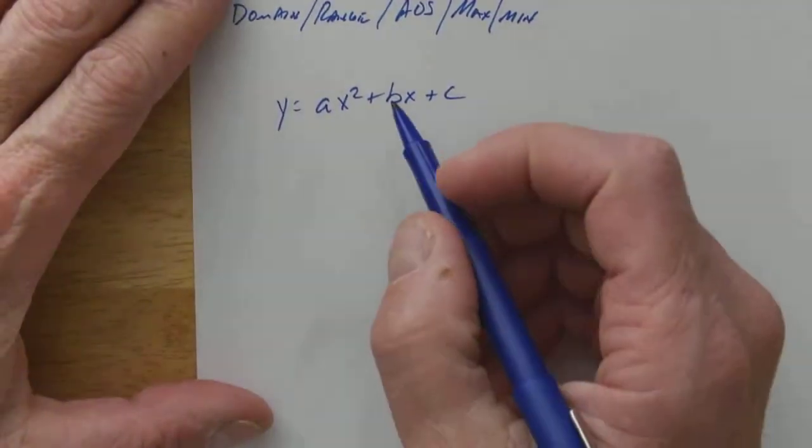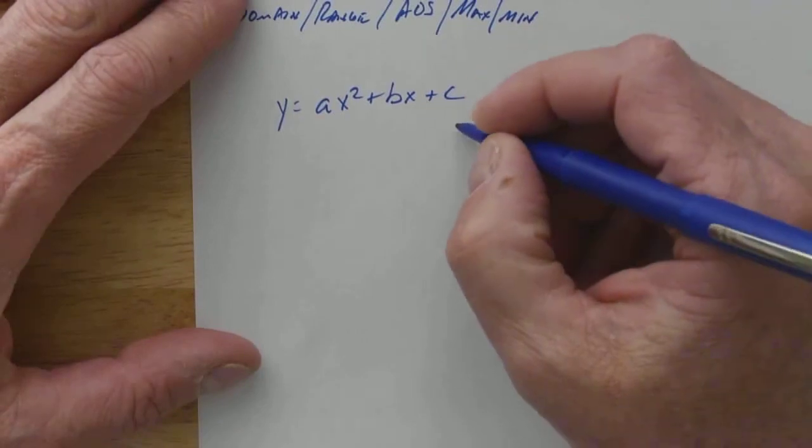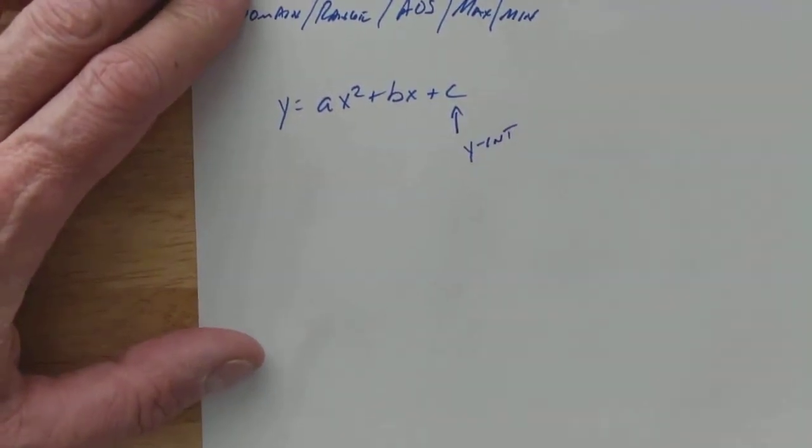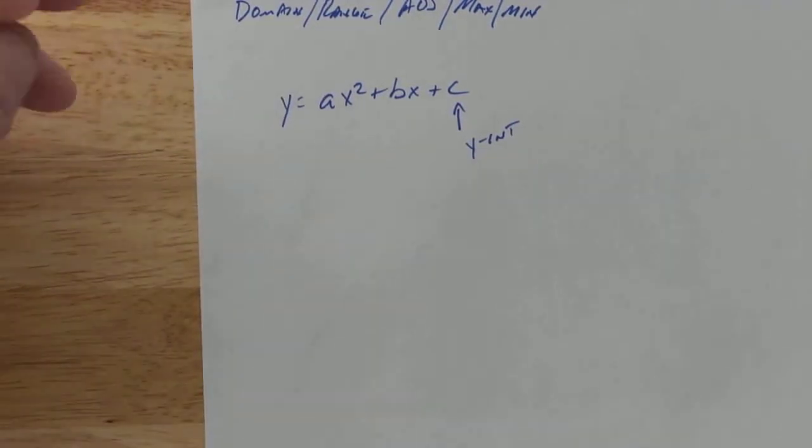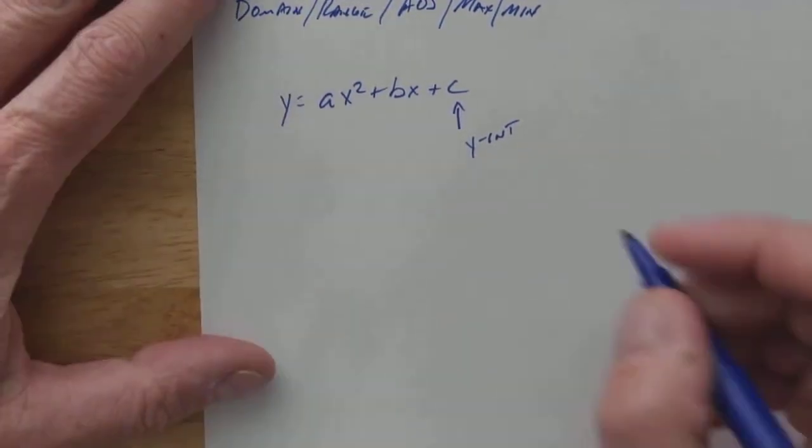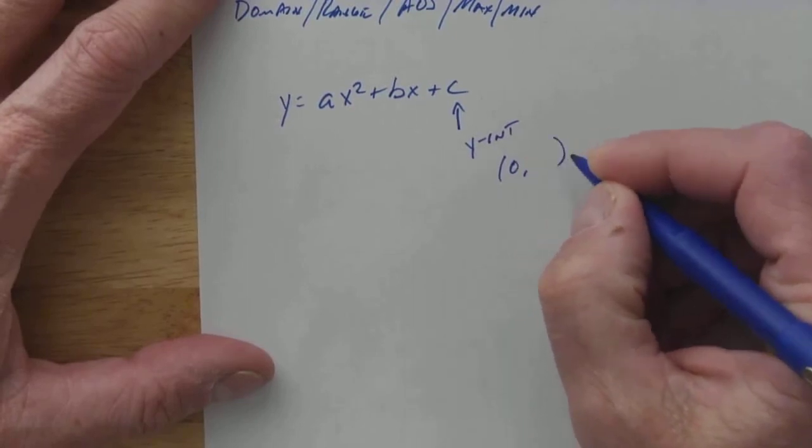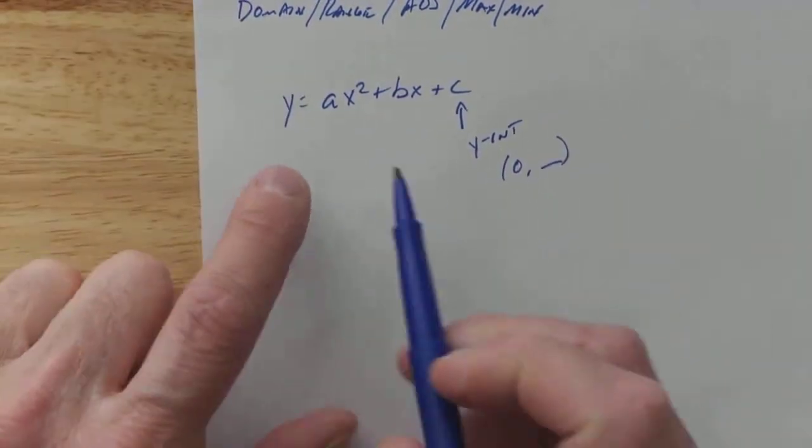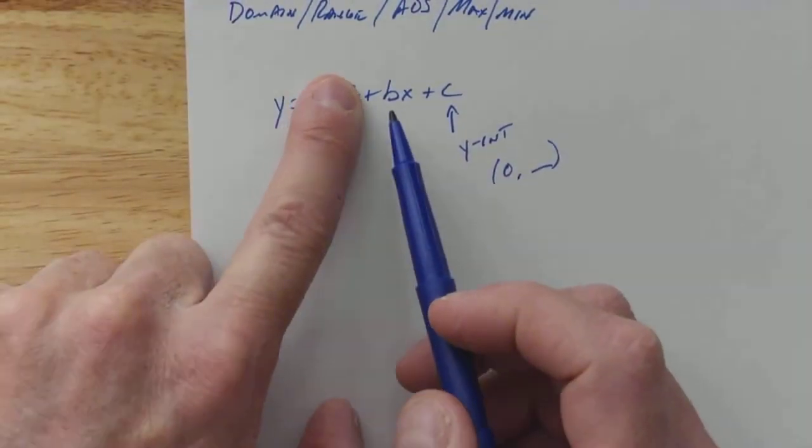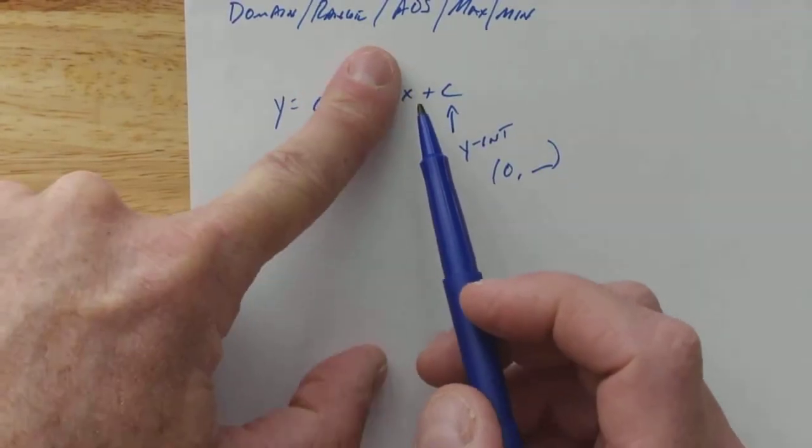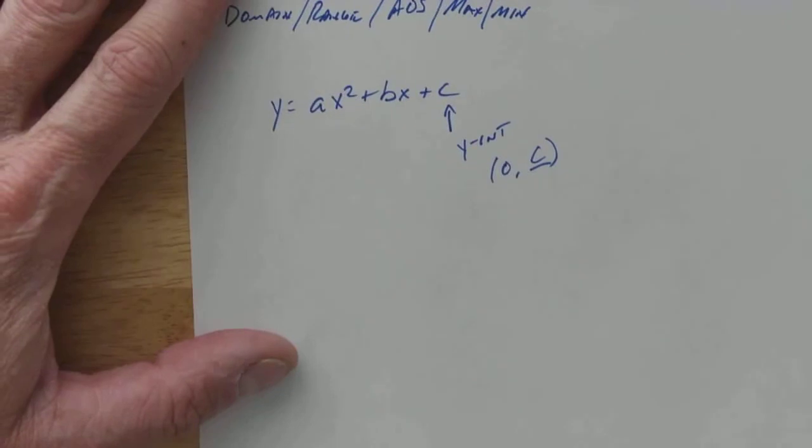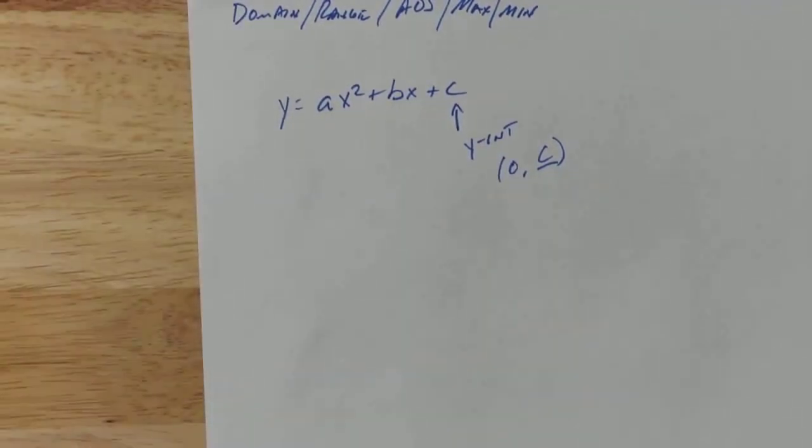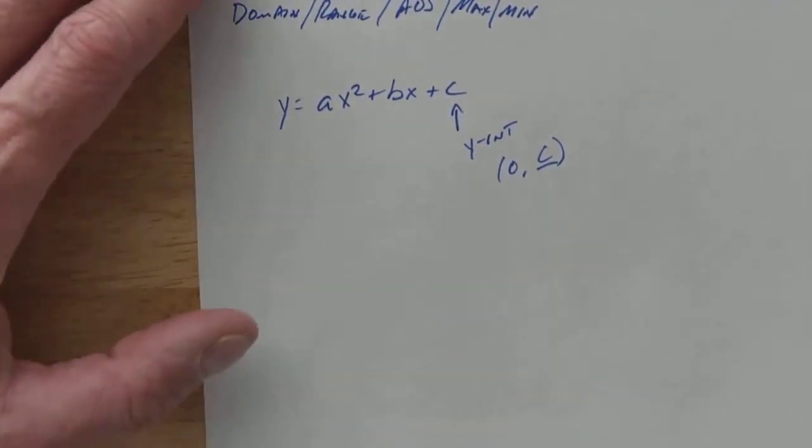So this right here, remember from yesterday, that's my y-intercept. If you look back at your worksheets, you'll be like, hey, yeah, that is my y-intercept. And why is it my y-intercept? Your y-intercept is always x equals 0 something. So if I plug in 0, it wipes that term out. Plug in 0, it wipes that term out. And the only thing I have left is c. On any polynomial, c is going to be your y-intercept.